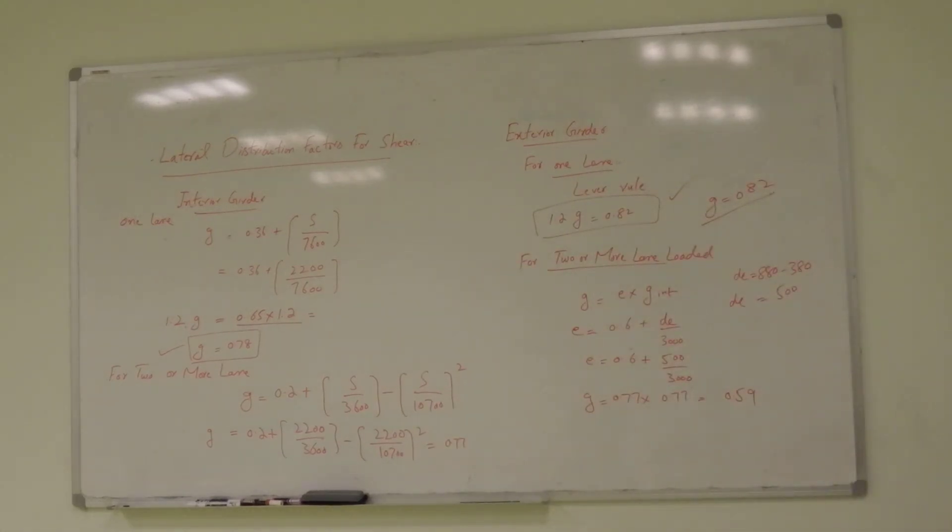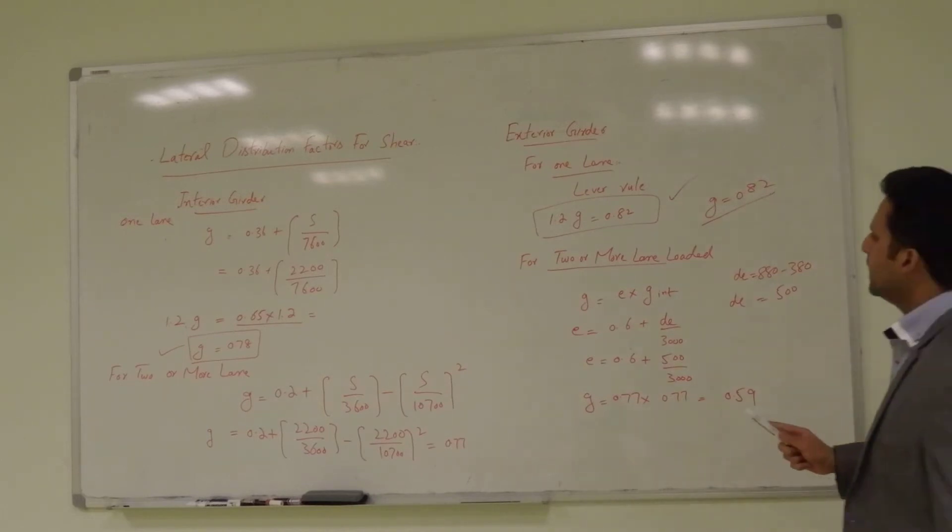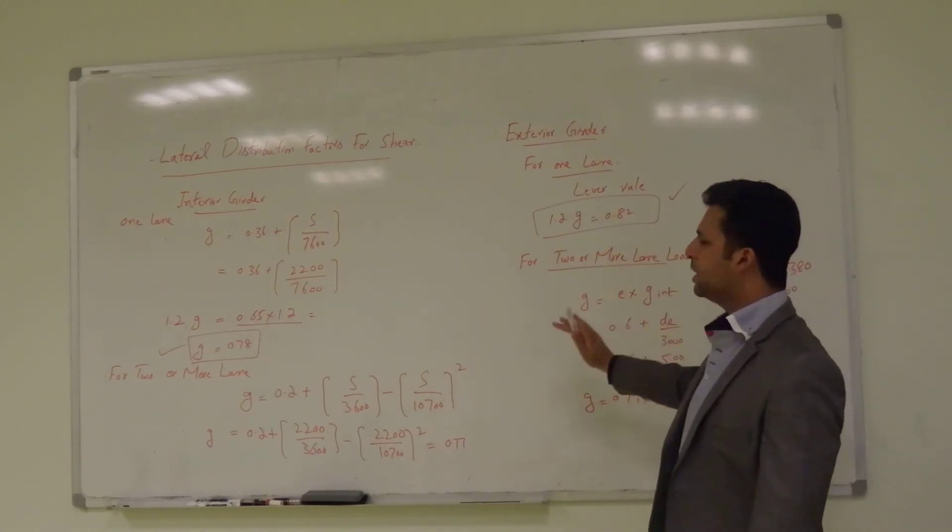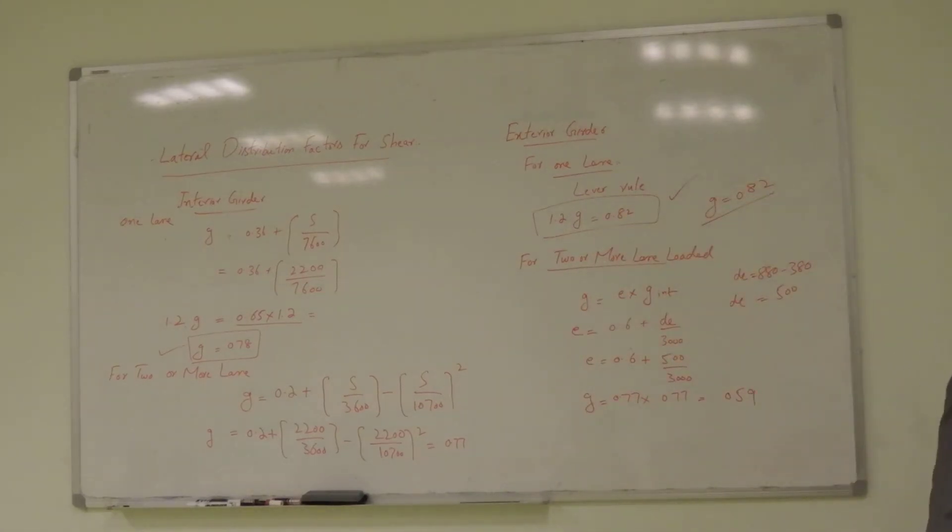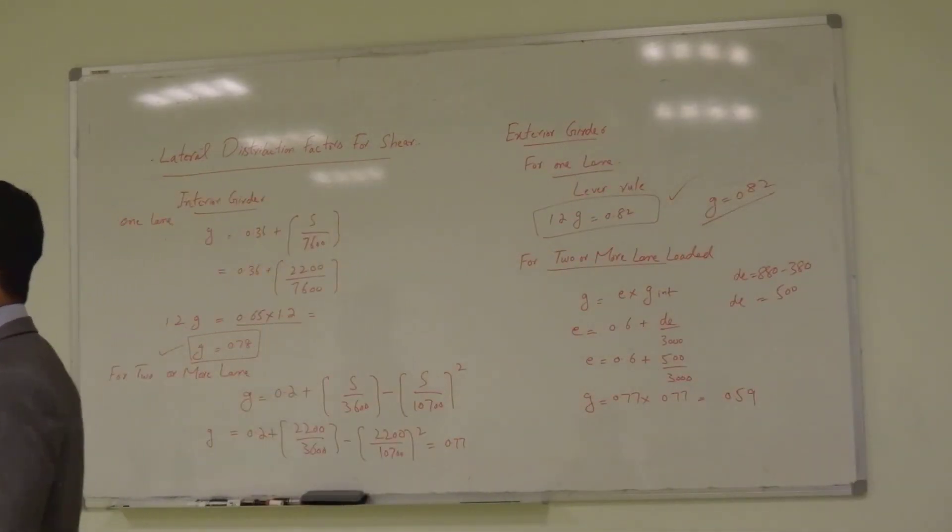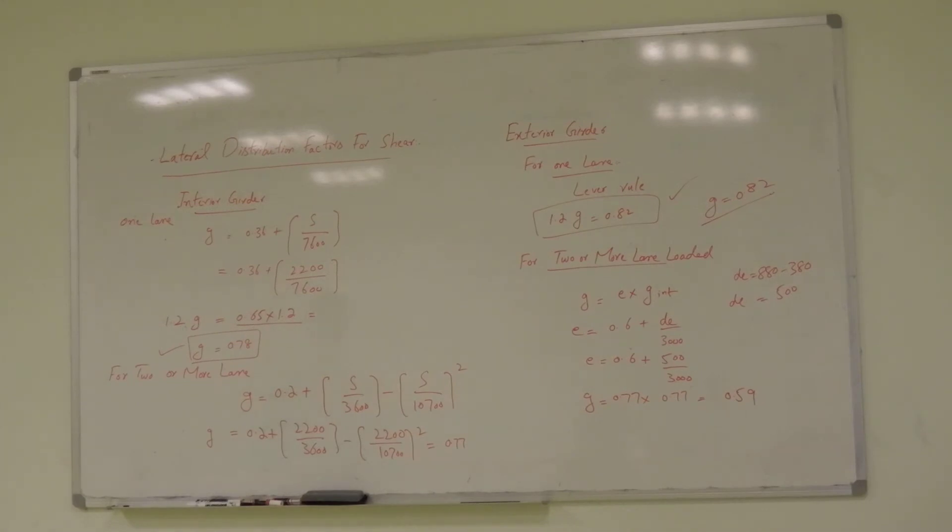Okay. So, we have the distribution factors for the shear, for interior girder and for exterior girder. Just keep these values in your mind and now let's proceed for the longitudinal distribution. This is the lateral distribution for the shear. Lateral distribution, I tell you many times, I explain you again.